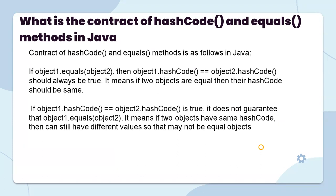What is the contract of hashCode and equals in Java? If object1.equals(object2) is true, then object1.hashCode() must equal object2.hashCode() — this should always be true. It means if two objects are equal, their hash codes must be the same. However, if object1.hashCode() equals object2.hashCode(), it does not guarantee that object1 equals object2. Two objects can have the same hash code but still have different values and may not be equal.